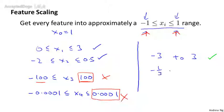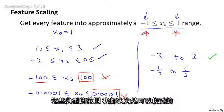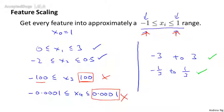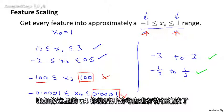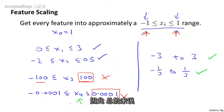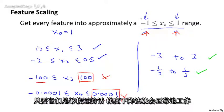And if it takes on values from, say, -1/3 to 1/3, I think that's fine too, or 0 to 1/3, or -1/3 to 0, or just that typical range of values I consider okay. But if it takes on a much tinier range of values, like x4 here, then again, I might start to worry. So the take-home message is don't worry if your features are not exactly on the same scale or exactly in the same range of values, but so long as they're all close enough to this, gradient descent should work okay.